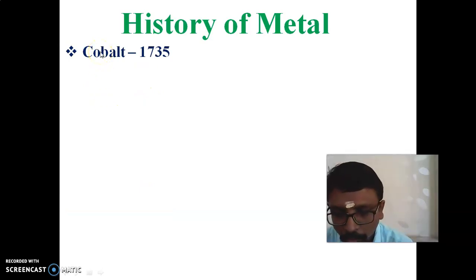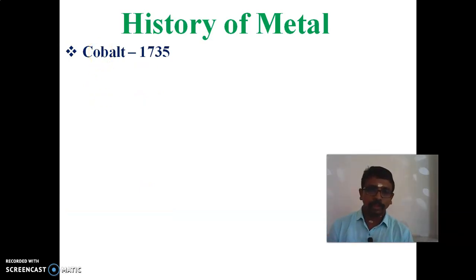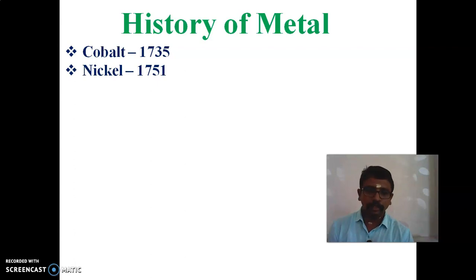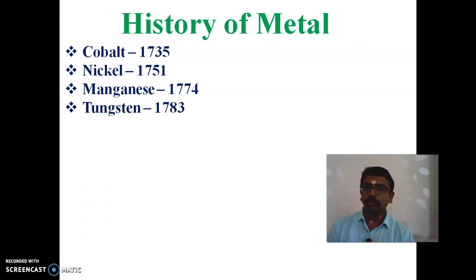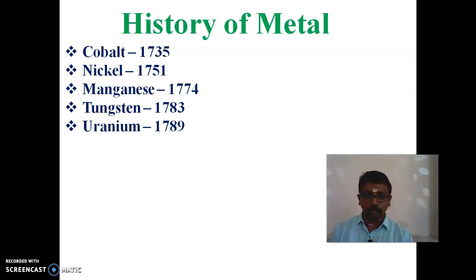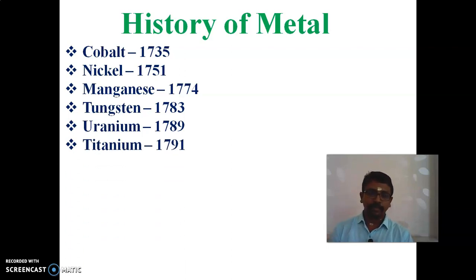Cobalt — the symbol for cobalt is Co, introduced in the year 1735. The symbol for nickel is Ni, introduced in 1751. The symbol for manganese is Mn, introduced in 1774. The symbol for tungsten is W, introduced in 1783. The symbol for uranium is U, introduced in 1789. Titanium was introduced in 1791, and its symbol is Ti.